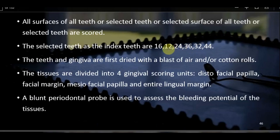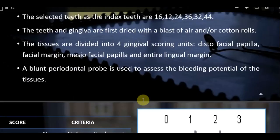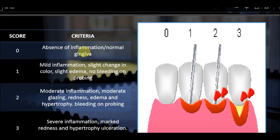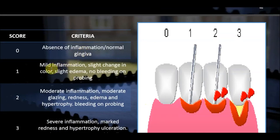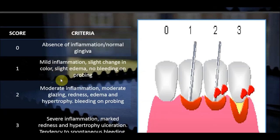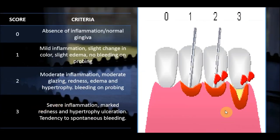For the Gingival Index, teeth and gingiva are first dried with air or cotton rolls. Each tooth is divided into four gingival scoring units: disto-facial papilla, facial margin, mesio-facial papilla, and entire lingual margin. A periodontal probe is used to assess bleeding potential. Scoring: 0 = no inflammation; 1 = mild inflammation, slight color change, light edema, no bleeding on probing; 2 = moderate inflammation, redness, edema, and bleeding on probing; 3 = severe inflammation, marked redness, edema or hypertrophy, and spontaneous bleeding.